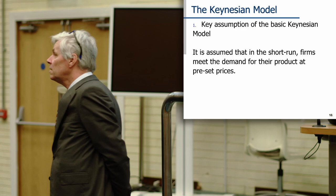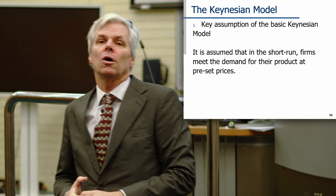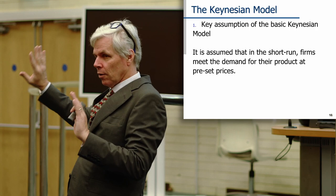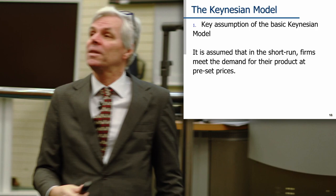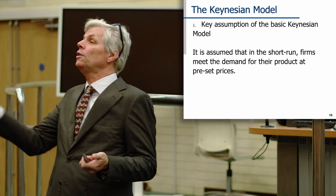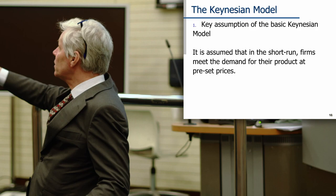Our key assumption — and this is the key, you can play around with other things, but this is really the key — is that in the short run, firms meet the demand for their product at preset prices. We're going to think of this as being an economy that just produces haircuts. They go and they post a price: 20 euros for a haircut. Then they wait at their shop and see who comes. If somebody comes, they cut their hair. If nobody comes, they don't cut any hair. We've set the prices and we're not going to play around with prices.